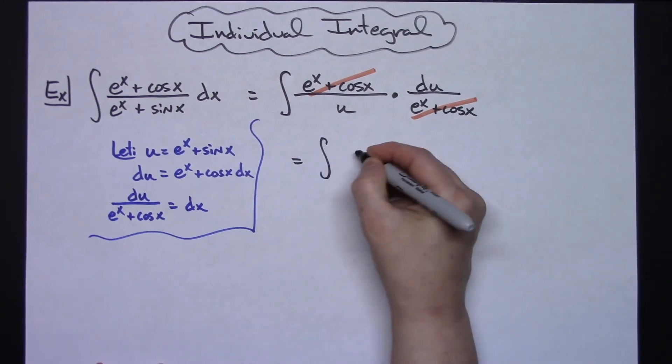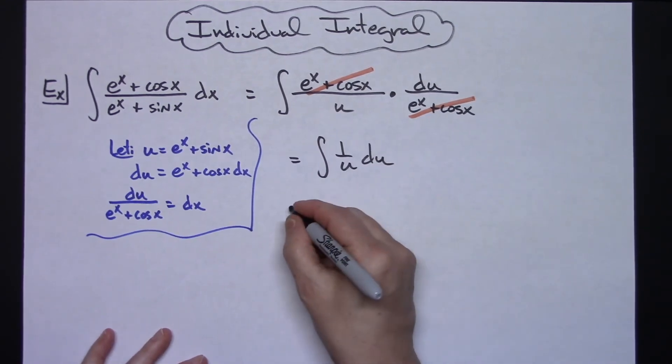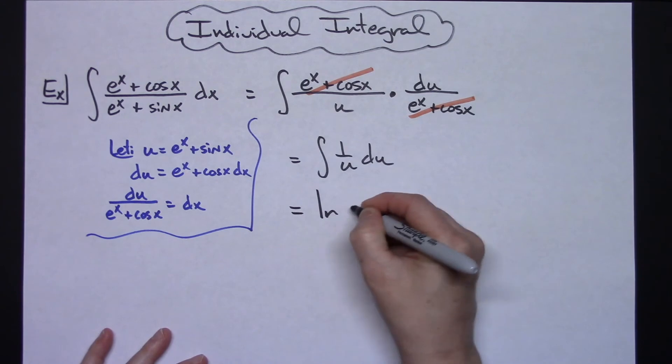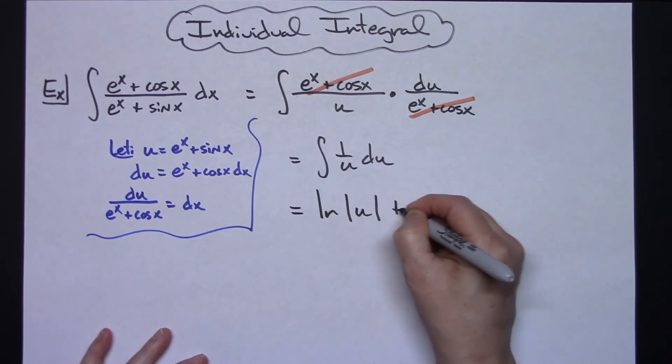That's going to leave us with the integral of 1 over u du, and that one we have memorized as being the natural log absolute value of u when we integrate that.